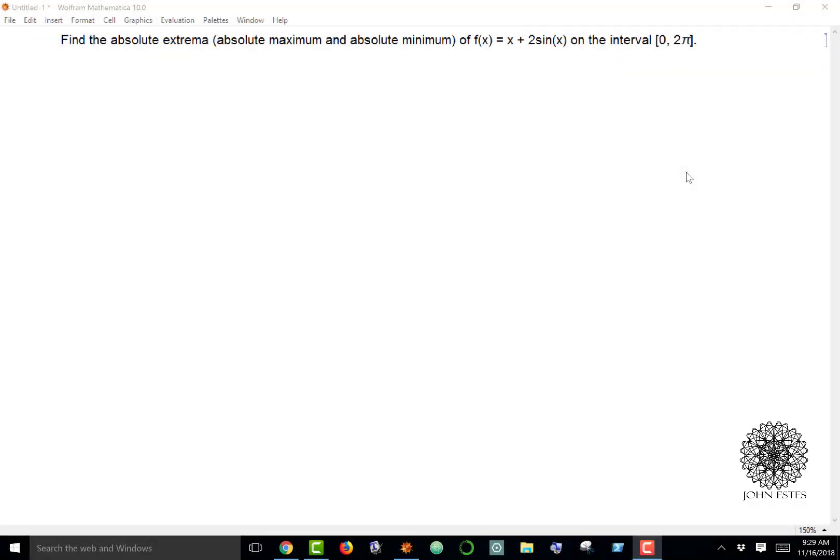I'm going to use Wolfram's Mathematica to answer a question finding an absolute extrema on a function. I want to find the absolute extrema—the absolute maximum and the absolute minimum—of the function f(x) which is x plus 2 sine x on the interval 0 to 2 pi.